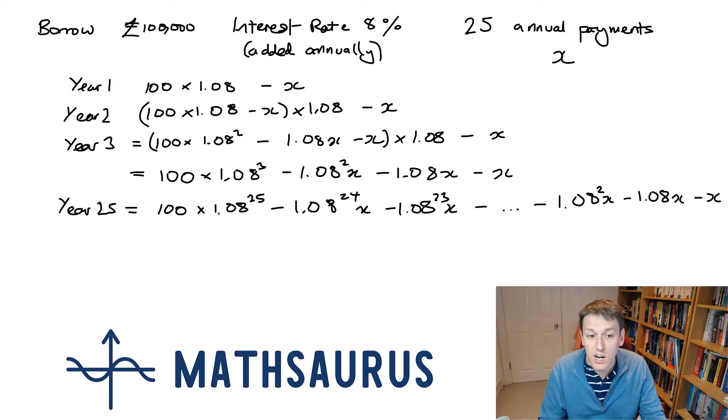And you can interpret this line quite nicely. So at the end of year 25, the total capital outstanding would have been 100 times 1.08 to the 25, have we not made any repayments. That's how much borrowing £100,000 at 8% would cost over 25 years without repayment.